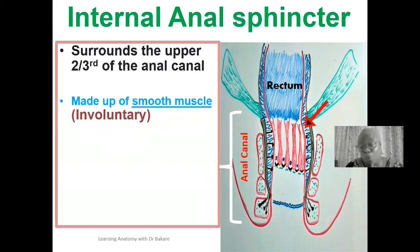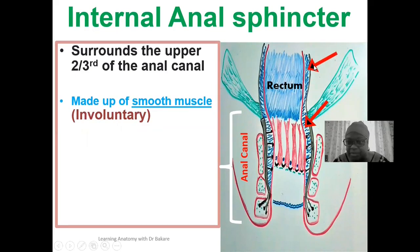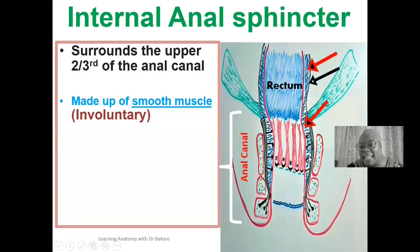The internal anal sphincter is made up of smooth muscle, which means it is an involuntary type of sphincter — not under voluntary control. Going back to the configuration of the gastrointestinal tract, the muscular layer is made up of the inner circular muscle and the outer longitudinal muscle. The rectum and anal canal form part of the gastrointestinal tract.